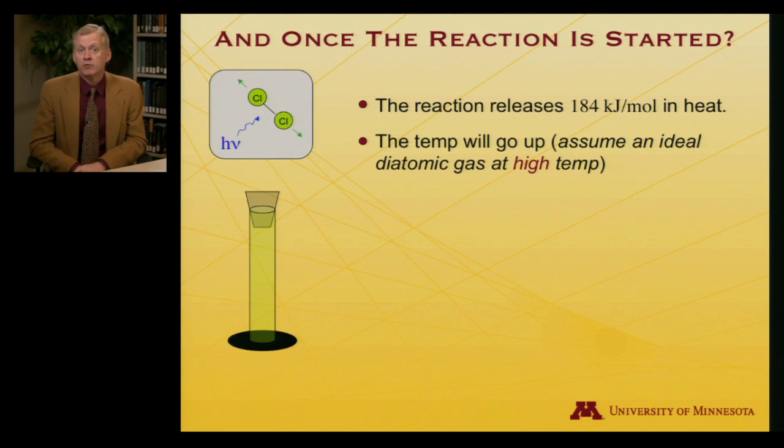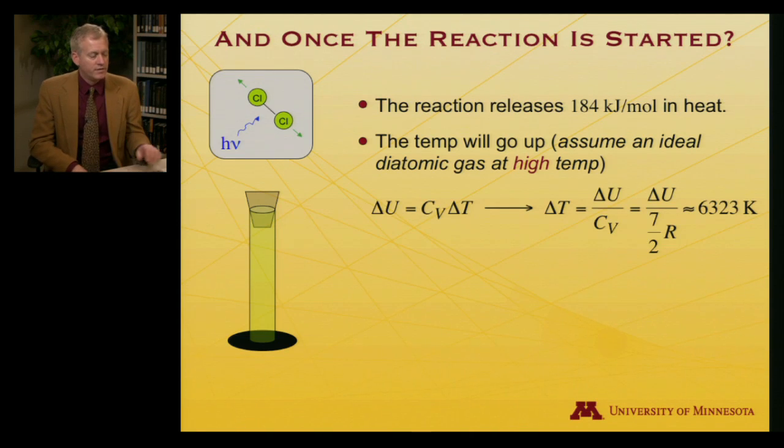When the reaction is complete, there will be 184 kilojoules per mole of thermal energy lying around that can be used to increase the temperature. So the temperature will go up. If we assume that we have an ideal diatomic gas, and we will very shortly be addressing what that means to be an ideal gas and what properties diatomic ideal gases have, then we can compute the temperature increase based on knowledge of the energy change and a heat capacity.